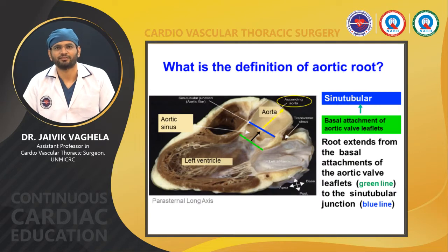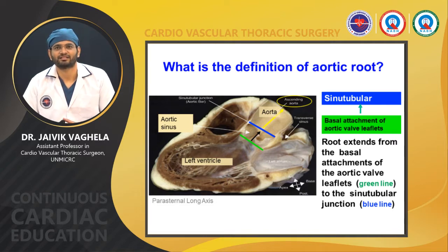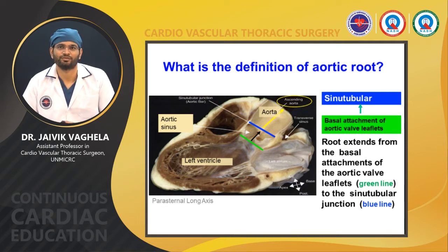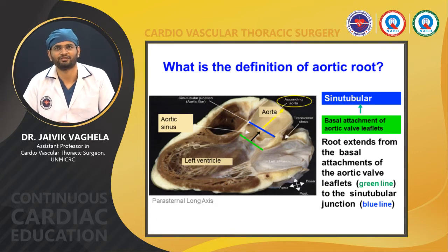First, we need to define the aortic root — where it starts and where it ends. The aortic root starts from the sinotubular junction, and its extent goes from the basal attachment of the aortic leaflet, indicated by the green line in the diagram, upward to the sinotubular junction. This whole part — including the aortic sinus, aortic annulus, coronary ostia, and sinotubular junction — all comprise the aortic root.